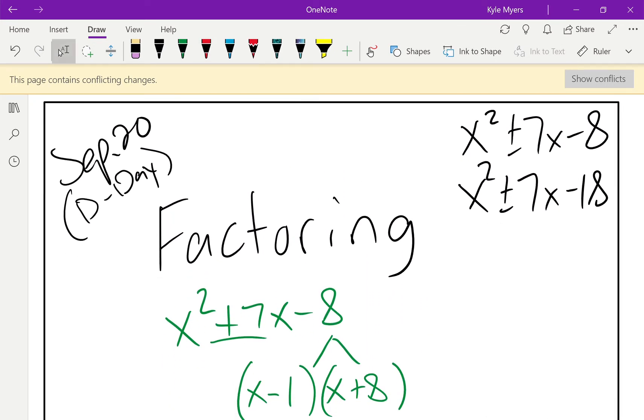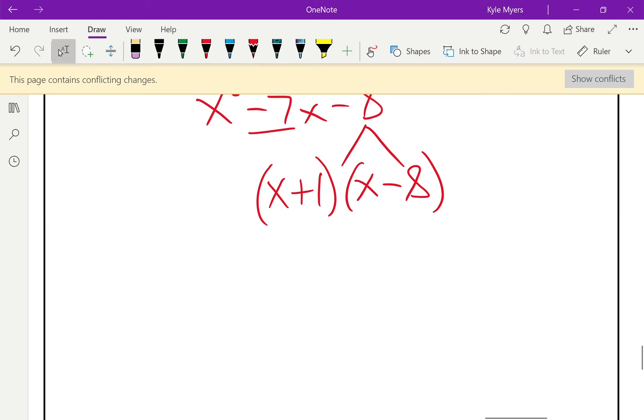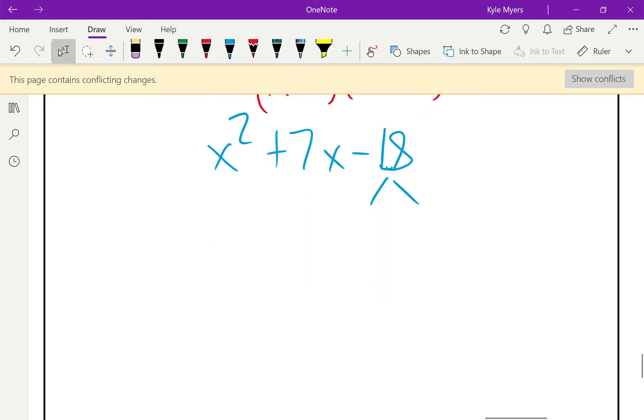And then for my last two here, X squared plus 7x minus 18. X squared plus 7x minus 18. So, I always start out with 1 and 18, right? We're 1 in that number. This one's definitely not going to work because I need to get 7. Right? So, negative 1 plus 18. That's a no-go.